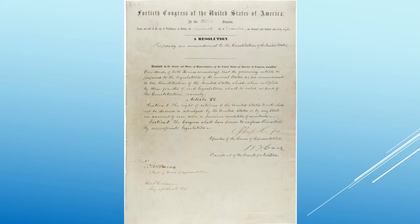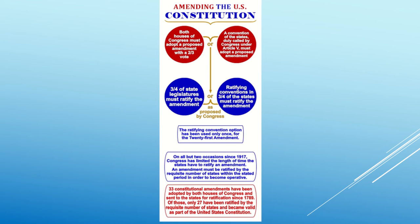If the Constitution has rarely been amended, part of it could be because it was designed to be difficult, but not impossible, to do so. Amendments must follow one of two different routes. Under the one followed by all amendments to date, two-thirds majorities of each House of Congress vote for their approval, and three-quarters of the state legislatures add the ratification. Under the second route, two-thirds of the states may vote to call a constitutional convention, whose proposed amendments must be ratified by three-fourths of the state legislatures.